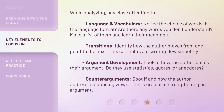While analyzing, pay close attention to language and vocabulary. Notice the choice of words — is the language formal? Are there any words you don't understand? Make a list of them and learn their meanings. Transitions: Identify how the author moves from one point to the next; this can help your writing flow smoothly. Argument development: Look at how the author builds their argument — do they use statistics, quotes, or anecdotes? Counterarguments: Spot if and how the author addresses opposing views. This is crucial in strengthening an argument.